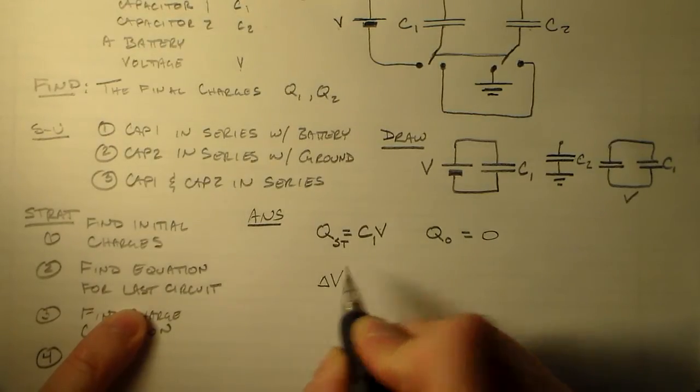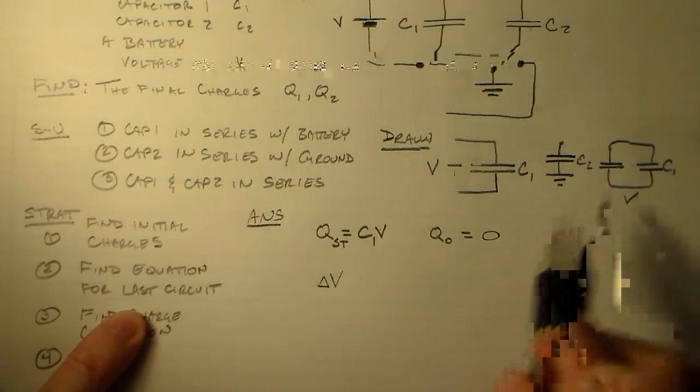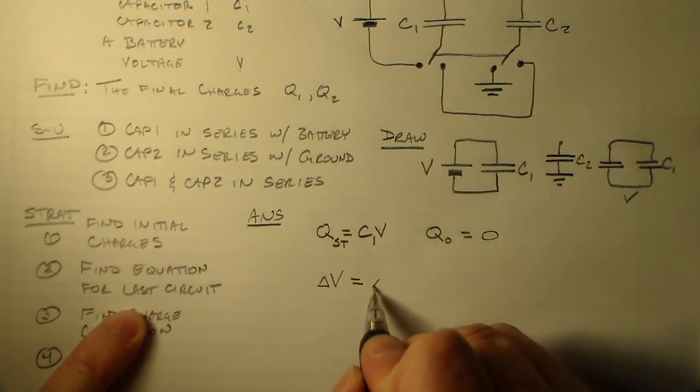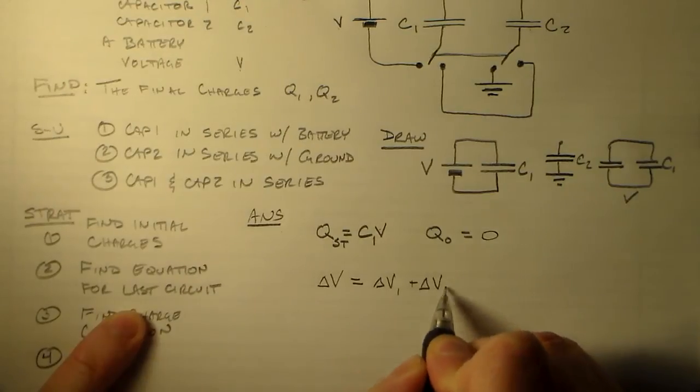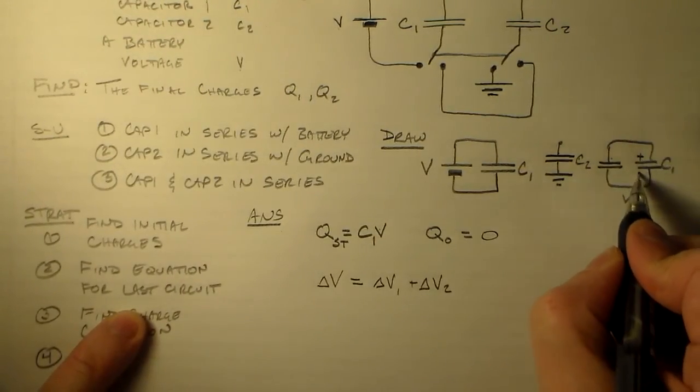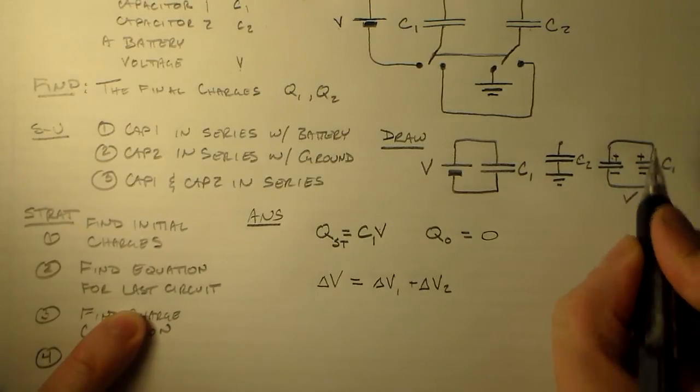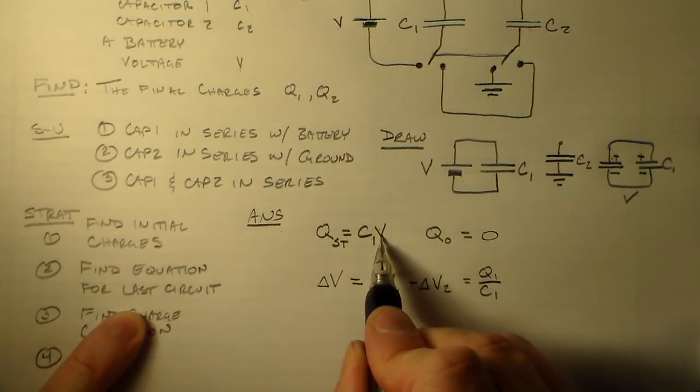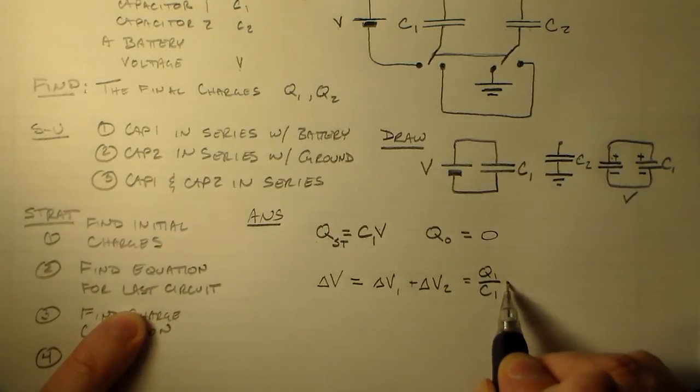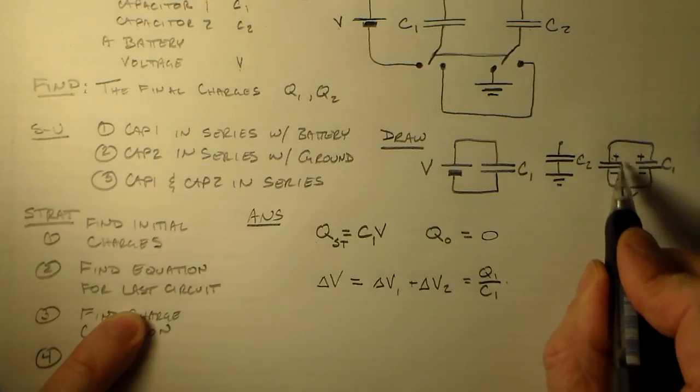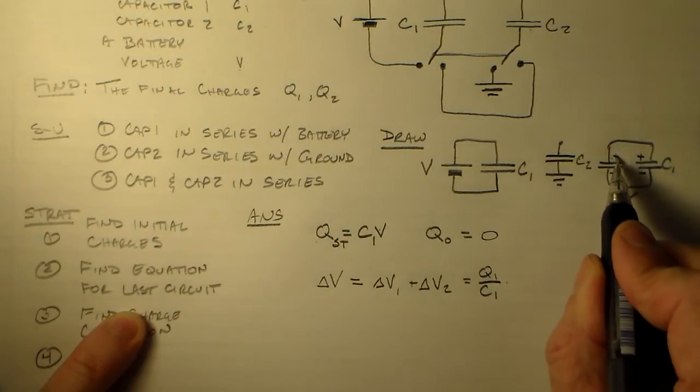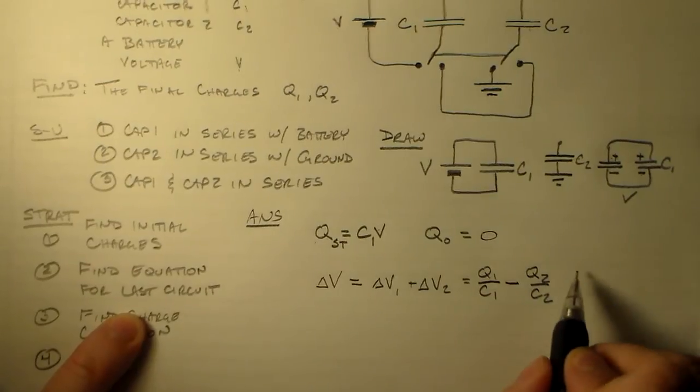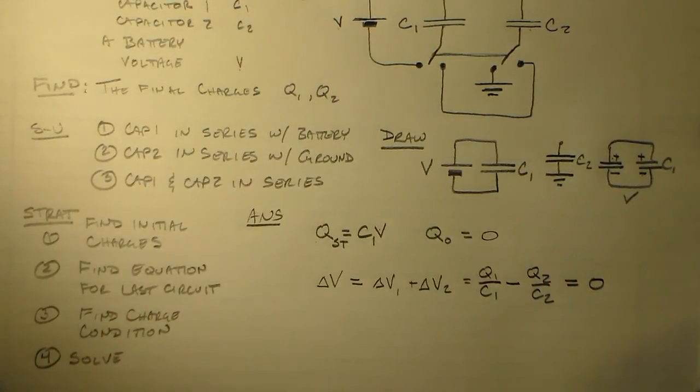So now we need to do our Kirchhoff's Law. When we go around here, we have to add up all of these changes in voltage around a loop. So we have delta V1 plus delta V2. If delta V1, we have positive and negative here, we have positive and negative here. So if this is positive, in that case, we have Q1 over C1. So to find delta V, we divide by C. And then because these are opposite orientations, from minus to plus, from plus to minus, we have a minus sign of Q2 over C2. And because it's Kirchhoff's Law, we get all that equal to zero.